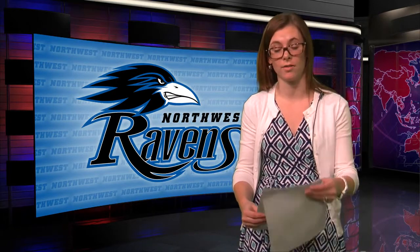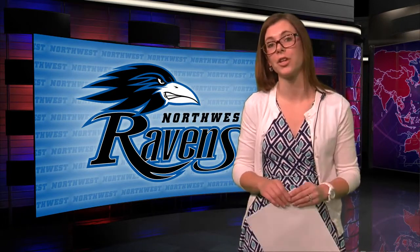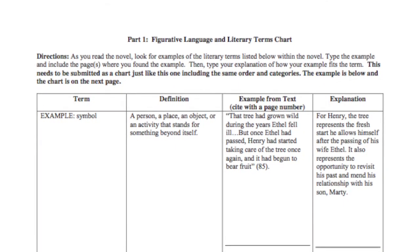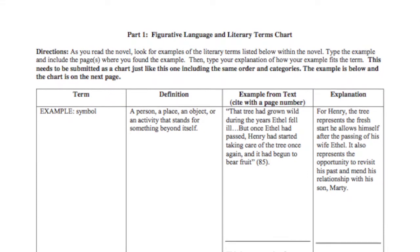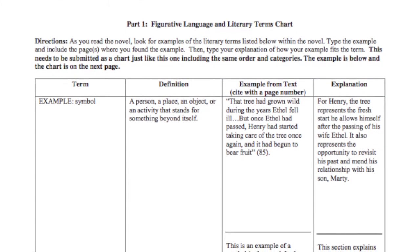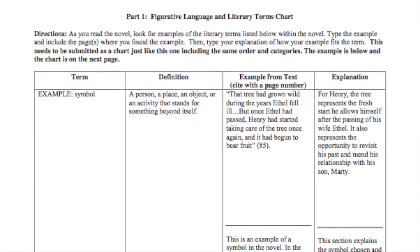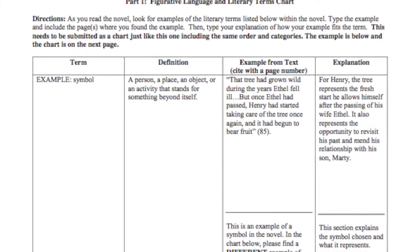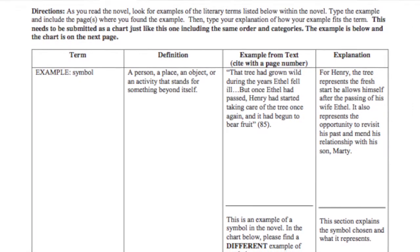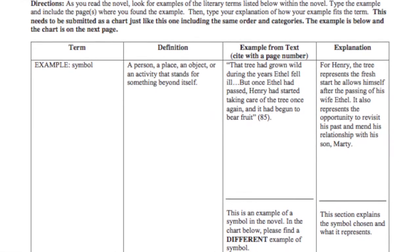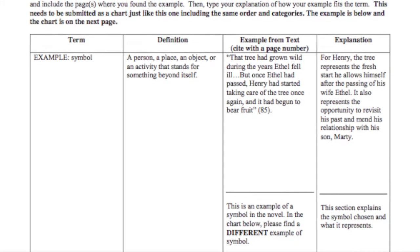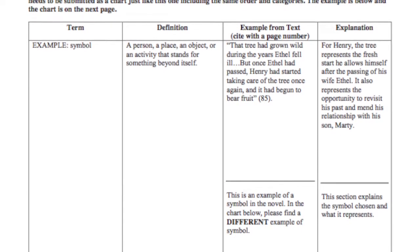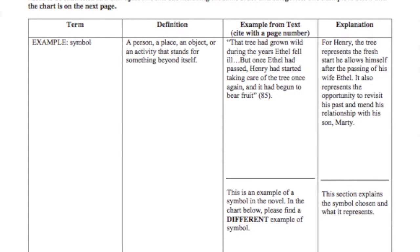Let's begin with part one of the assignment: the figurative language and literary terms chart. I've given you an example on the second page of a symbol — it defines it in the second column and provides a quote. Your job is to find those quotes and provide the explanation. Notice in the example that it's an accurate example of the literary device, and in the explanation, they don't simply summarize what's happening in the story, but explain why the author used that device. Make sure you're doing that within your own explanations.